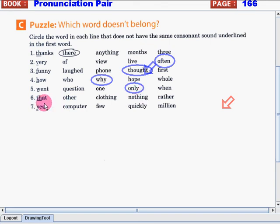Number 6. That has voiced TH sound. Now, let's take a look at the words here: other, clothing, nothing, rather. Way to go! The word that doesn't have voiced TH sound is the word nothing. Number 7. Yes has Y sound. Now, let's take a look at the words that are not having Y sound. We have words like computer, few, quickly, million. Very good! The word is quickly. Quickly has W sound and not Y sound. Great!